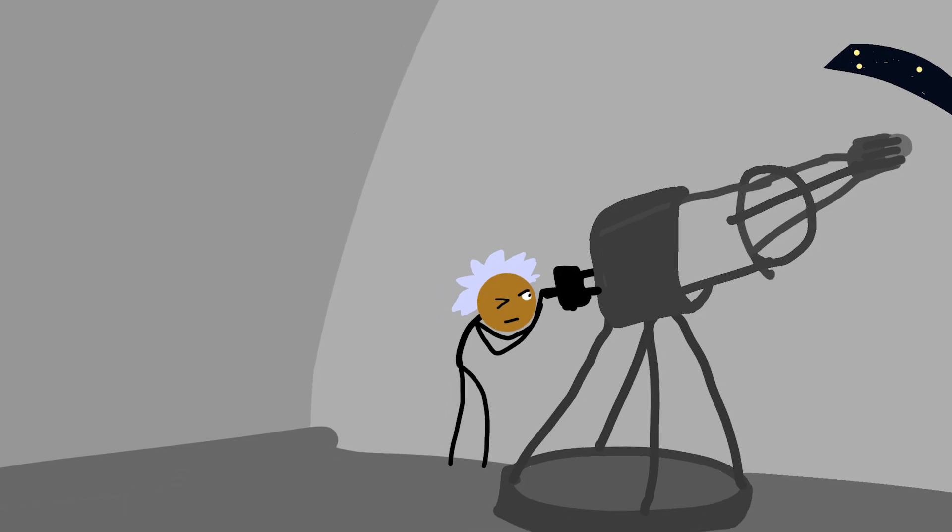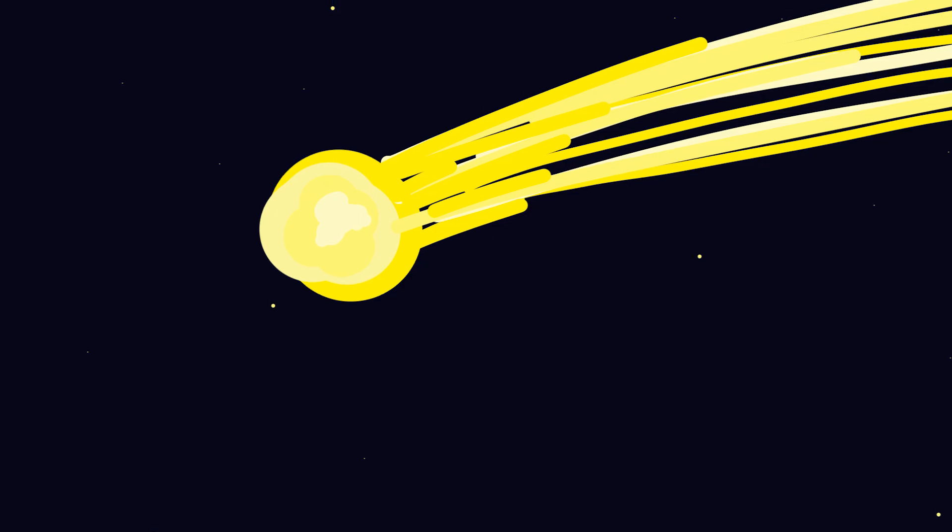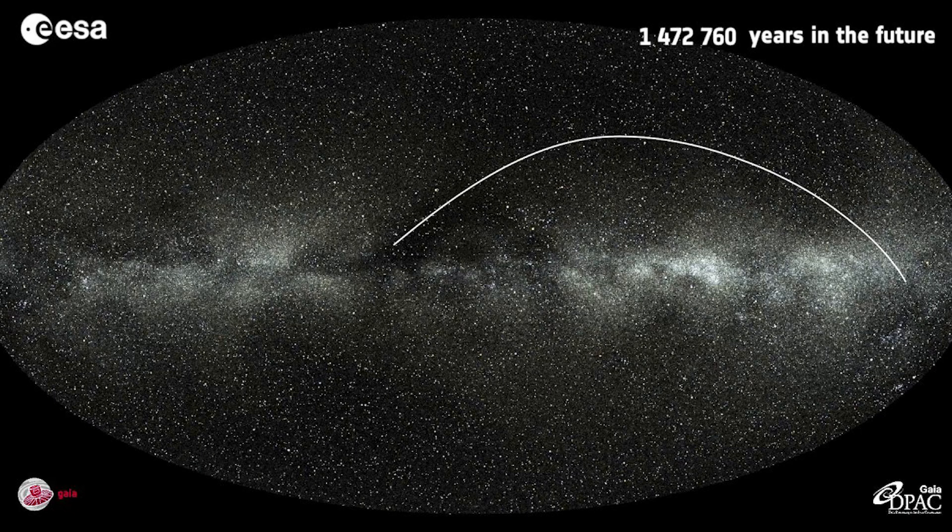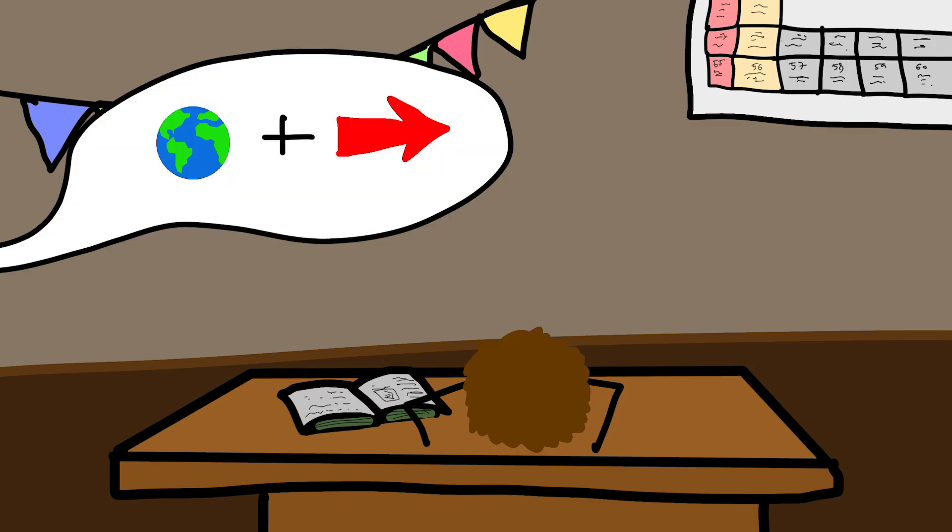But it would still not come as a surprise. Astronomers already track about 90% of nearby stars within 100 light years. A star moving toward us fast enough to disturb the solar system, like Gliese 710, would be spotted centuries or millennia ahead. Which is why you remember the day you learned about it in school.